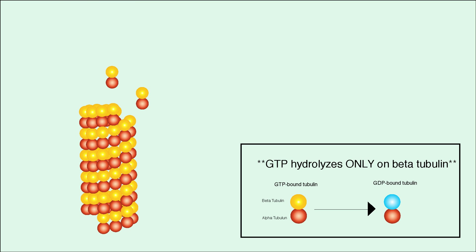Addition of more GTP-bound dimers stabilizes the filament again in a process called rescue. Since the rate of GTP hydrolysis is fairly constant, the transition between catastrophe and rescue is controlled primarily by the rate of addition.